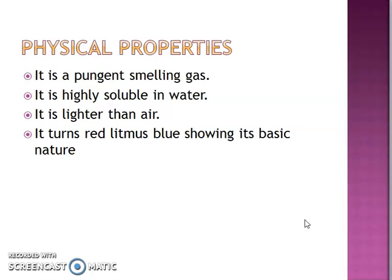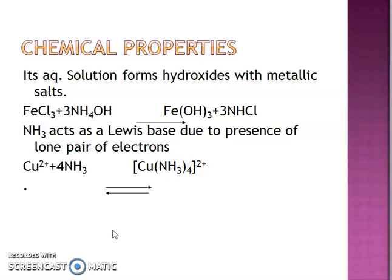Ammonia turns red litmus to blue, showing its basic nature. As we have studied, NH3 is basic due to the presence of a lone pair, or due to its tendency to accept H+ ions. Therefore it is basic, and practically we can prove this as it converts red litmus to blue litmus.